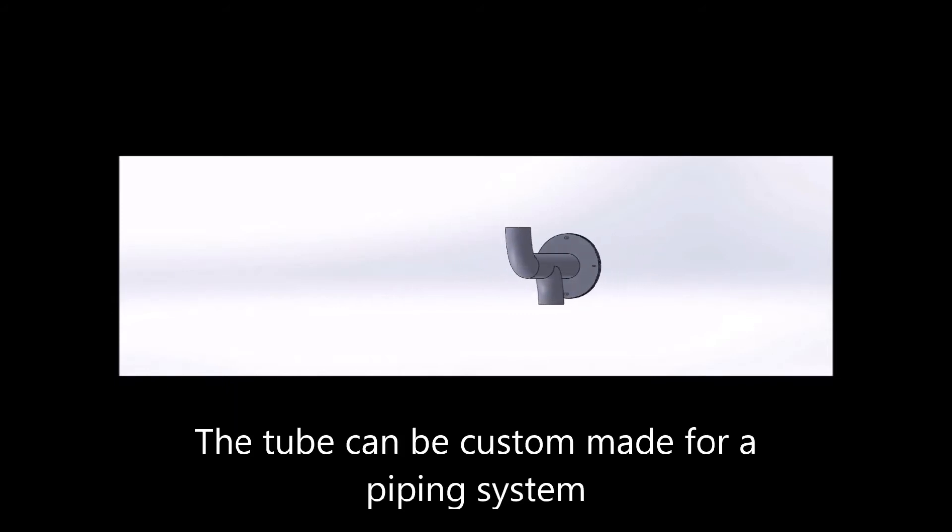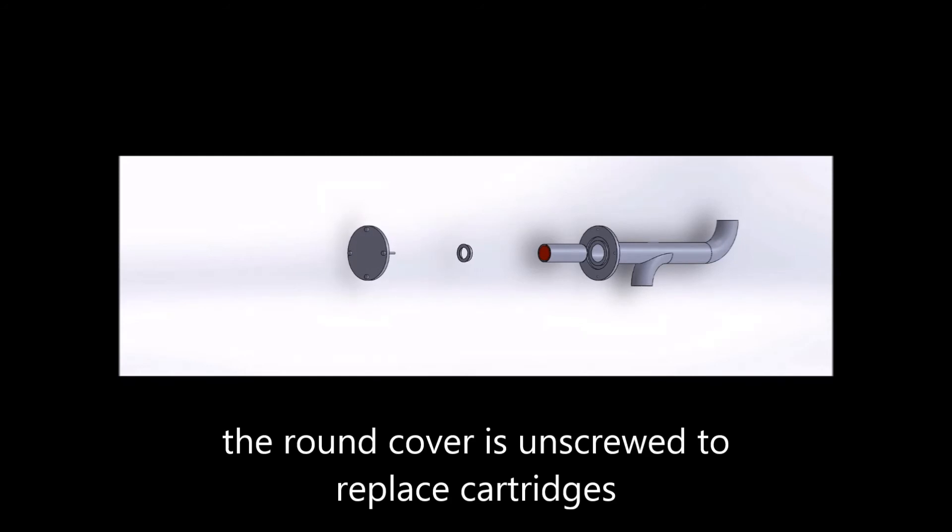The tube has a rounded cover at one end which can be unscrewed to remove the cartridge once the active material is spent. The cartridge is easily replaceable and ready to filter again.